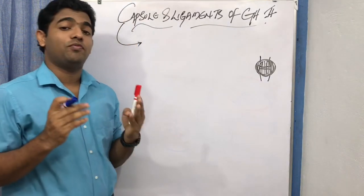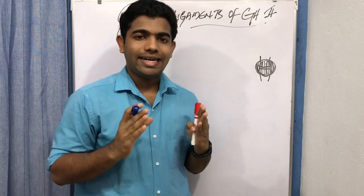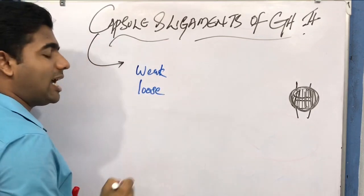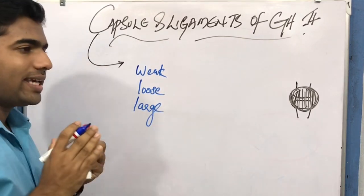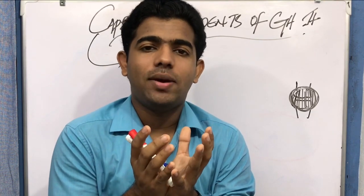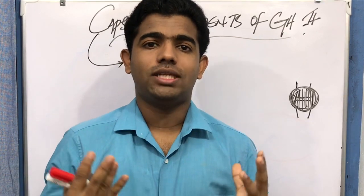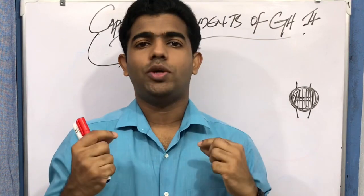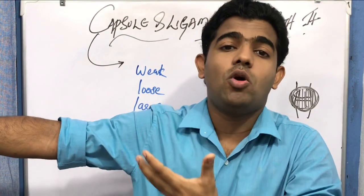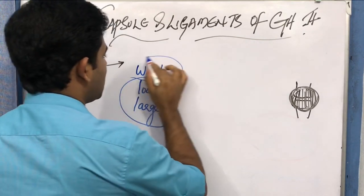The glenohumeral capsule has some peculiarities. The capsule is a weak one and a loose one, but at the same time it is also large. When a capsule is tight, rigid, and small, the range of motion is restricted. But at the glenohumeral joint we have the greatest mobility in the body, so the capsule is loose, large, and weak.